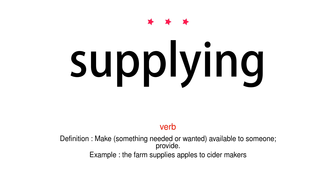Supplying. Verb. Definition: Make something needed or wanted available to someone; provide. Example: The farm supplies apples to cider makers.